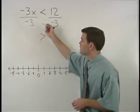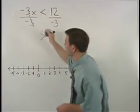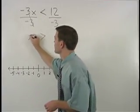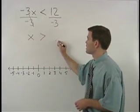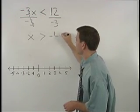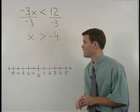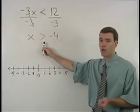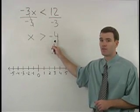On the left side, the negative 3s cancel and we're left with x. And on the right side, 12 divided by negative 3 is negative 4. So we have x is greater than negative 4.